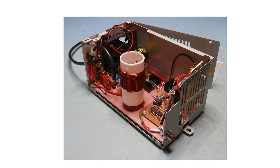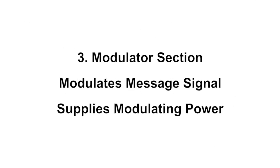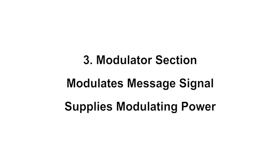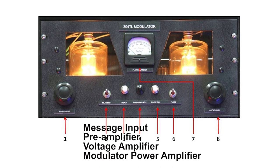It depends on the modulating condition. Third, modulator section. It modulates the message signal and supplies the modulating power. It includes message input, pre-amplifier, voltage amplifier and modulator power amplifier.